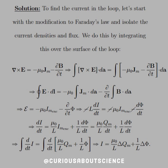Our solution here — to find the current in a loop — let's start with the modification to Faraday's law and isolate the current densities and flux. We do this by integrating over the surface of the loop. So if we have this modification, we apply the surface integral. We can then invoke Stokes' law, or the curl theorem, to take that surface integral to a line integral.